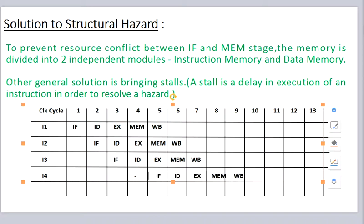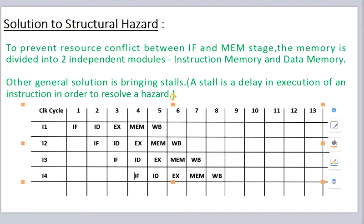Another general solution is introducing stalls. A stall is a delay in execution of an instruction in order to resolve a hazard. In this normal execution of instructions in a pipeline, there is a hazard between instruction four and the first instruction. So we put a stall in the fourth clock cycle and start our instruction fetch in the fifth clock cycle.